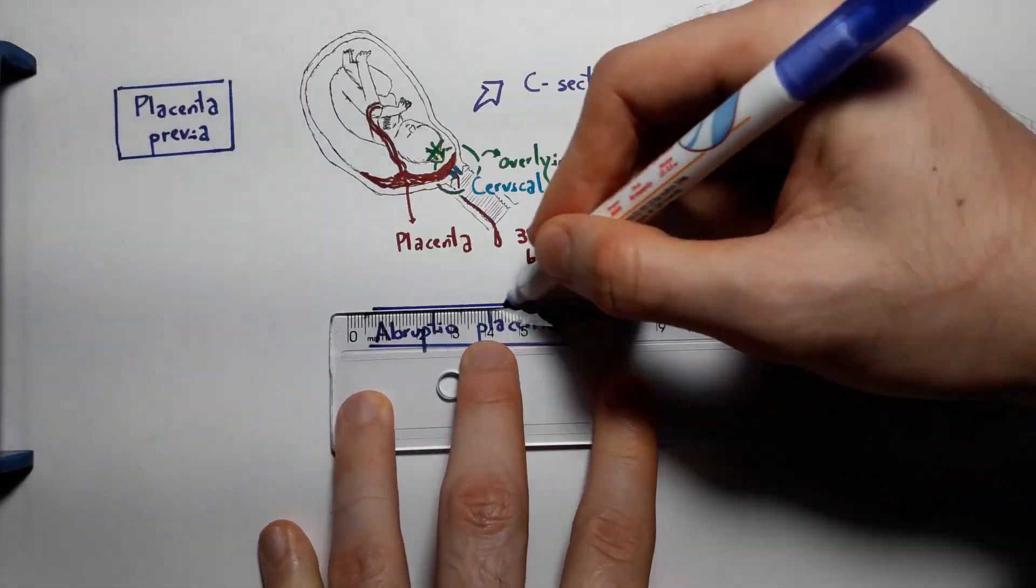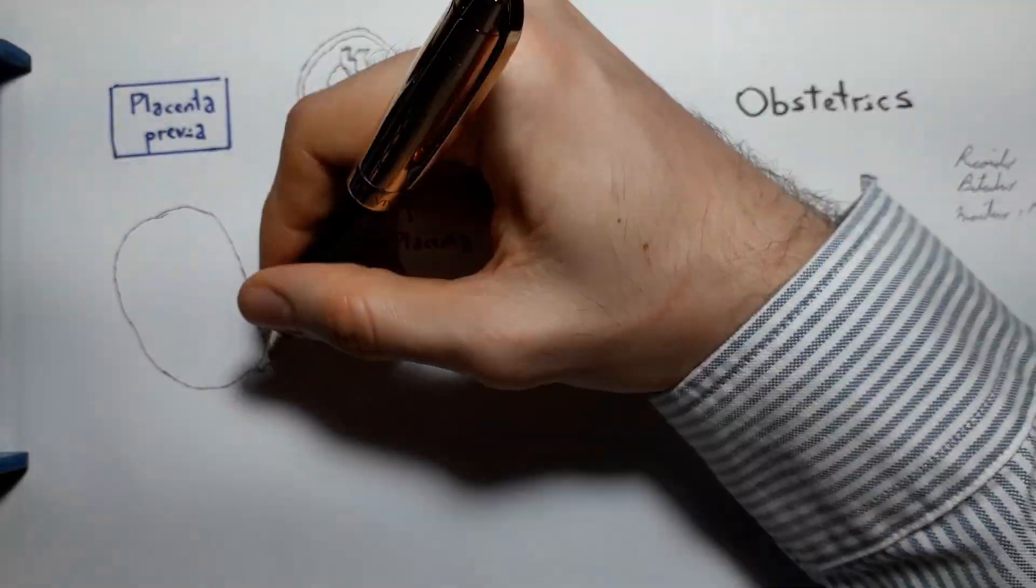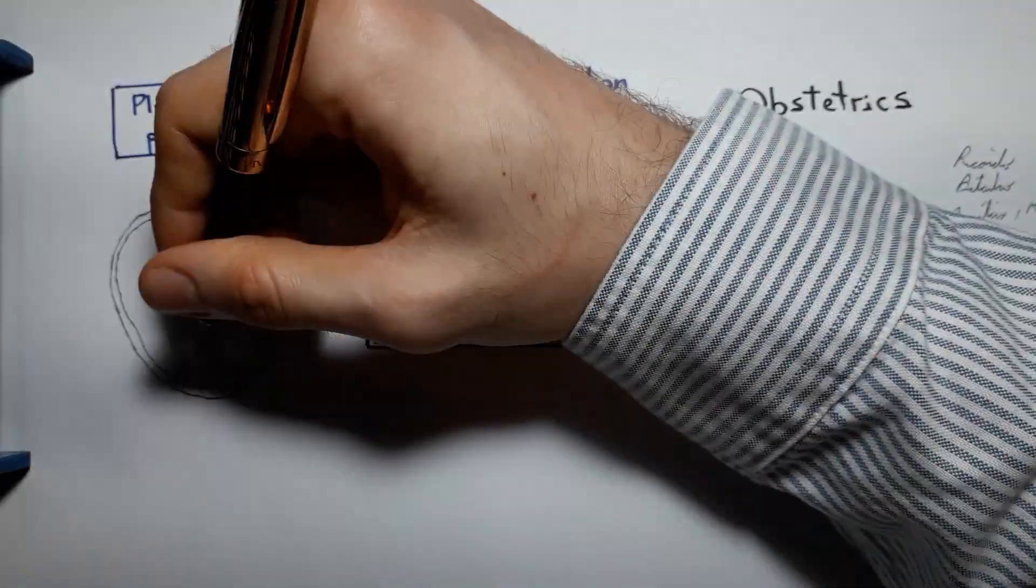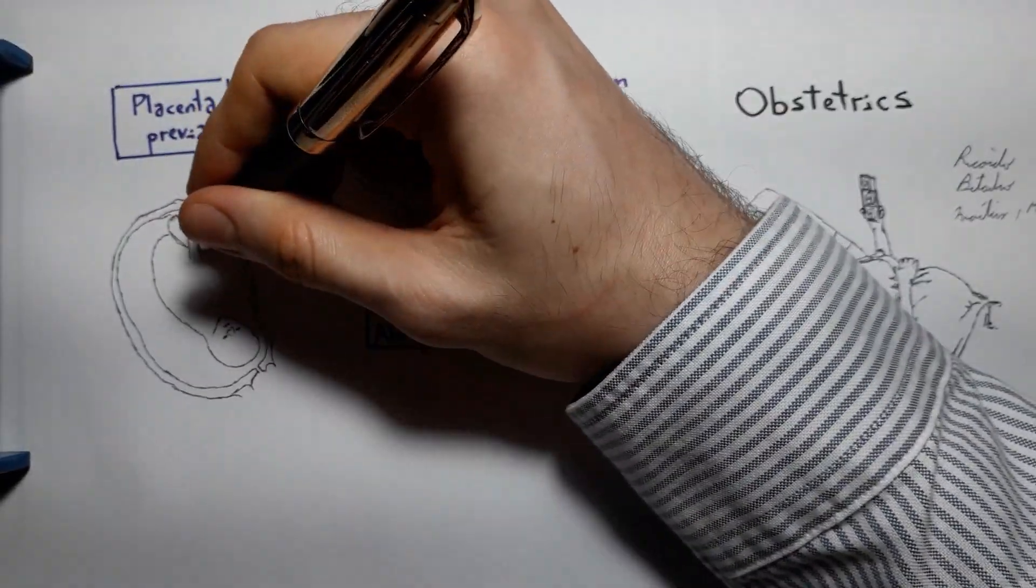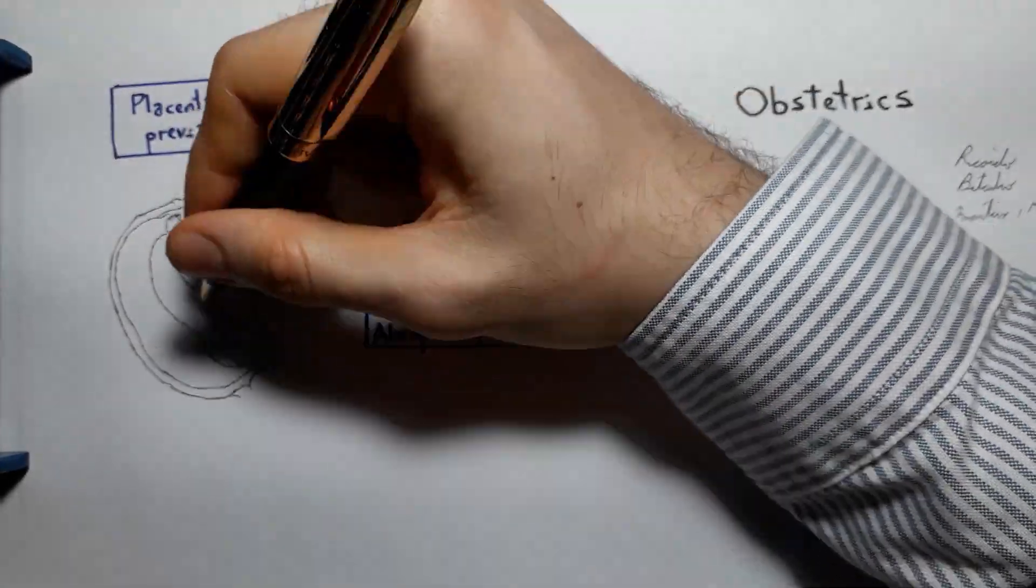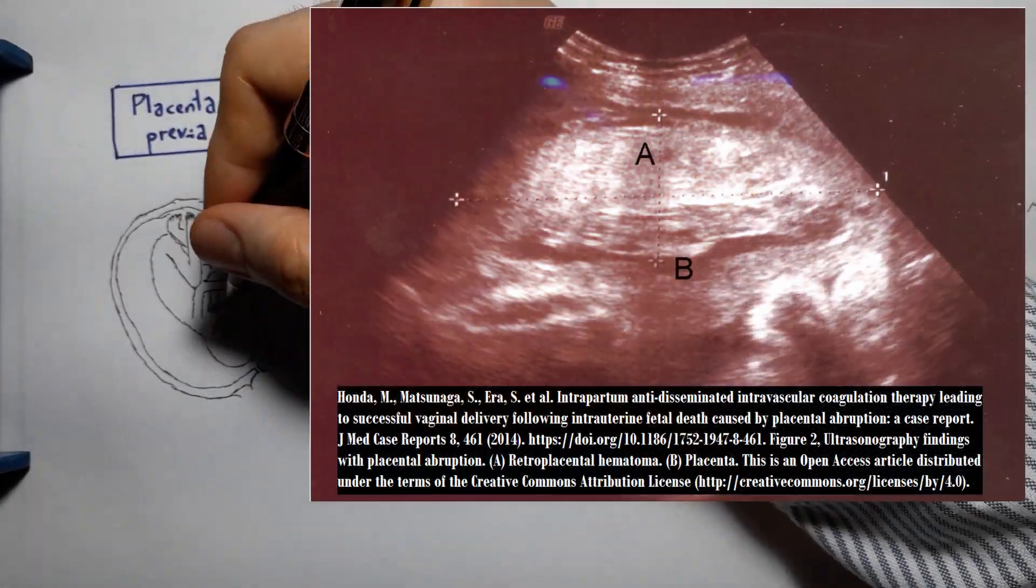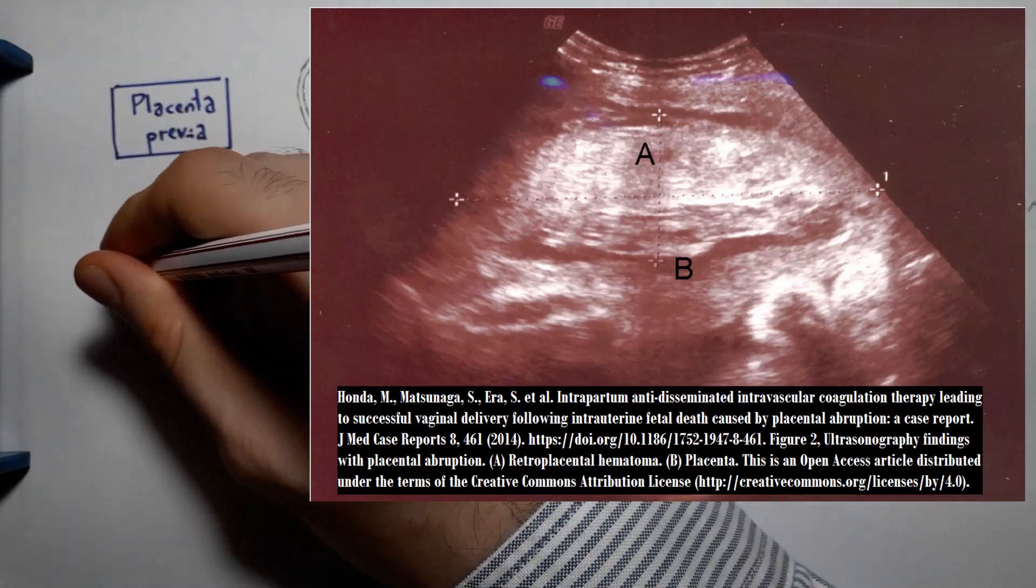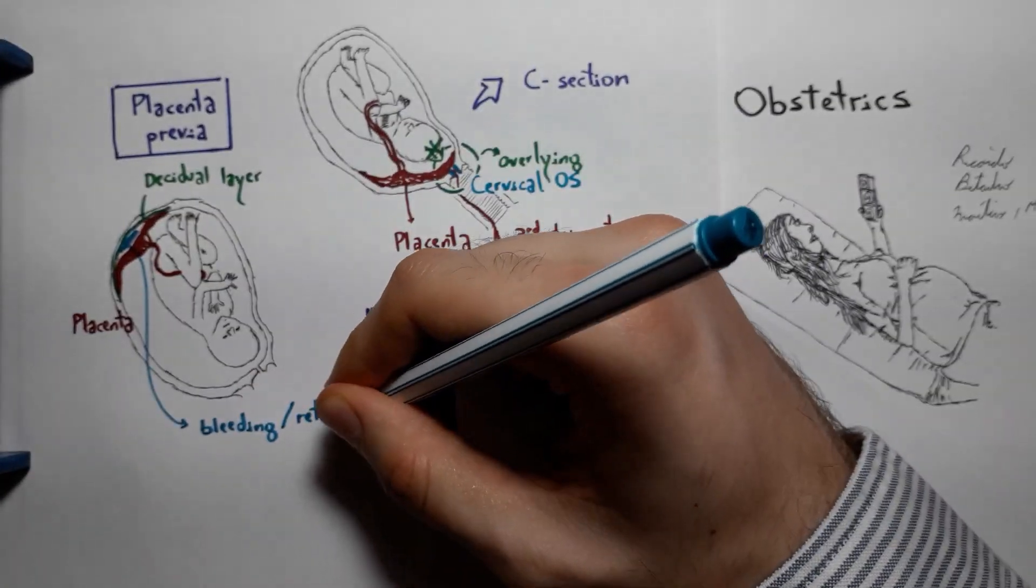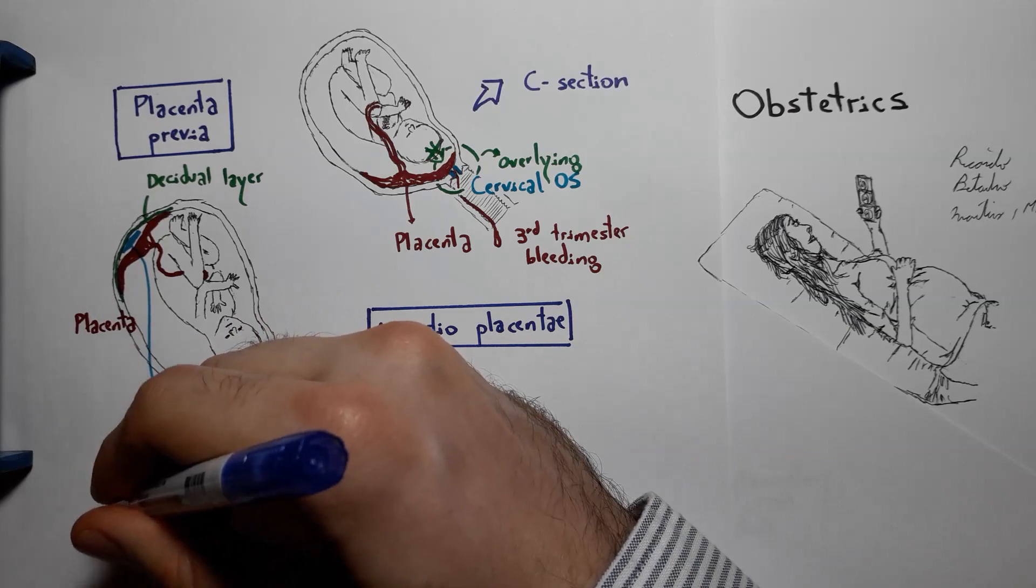Another potential obstetrical emergency is placental abruption or abruptio placentae. This happens when the placenta detaches from the decidual layer prematurely. When the placenta is separated from the decidual layer before delivery, bleeding into the newly formed space between the placenta and the decidua may form a positive feedback cycle, causing the placental detachment to progress further, which also causes further bleeding, which can be observed as retroplacental clots.